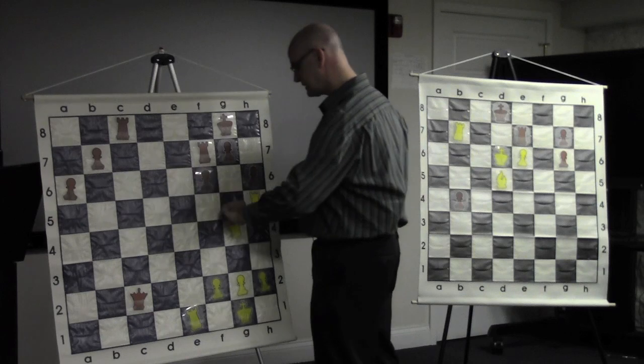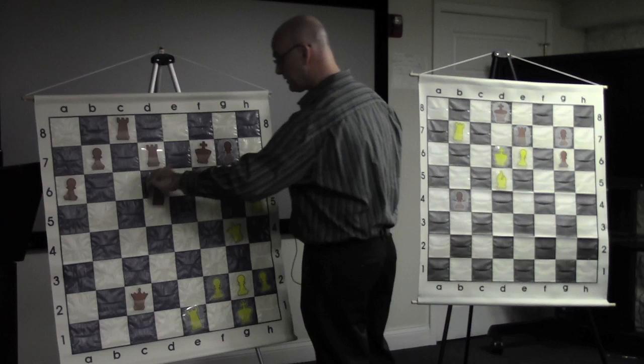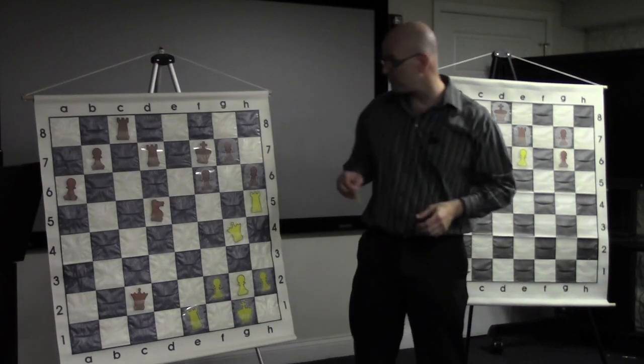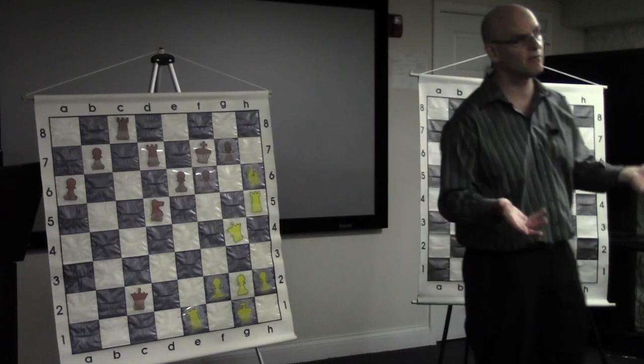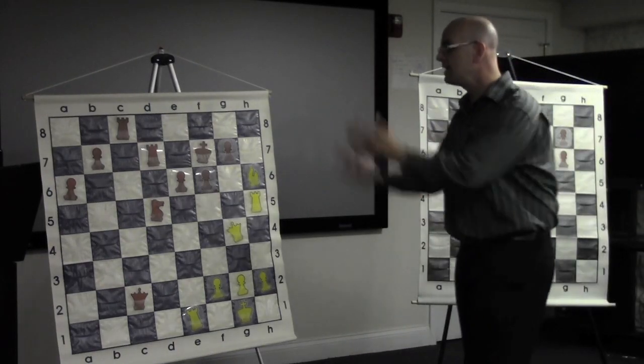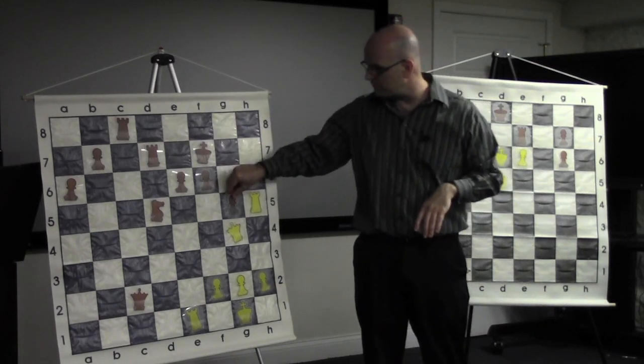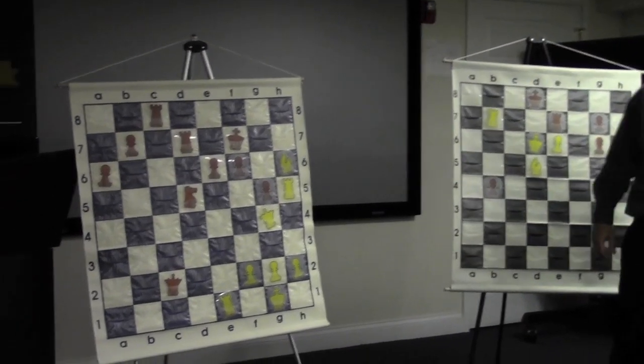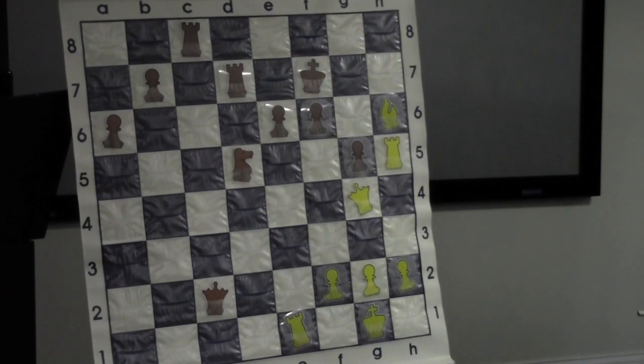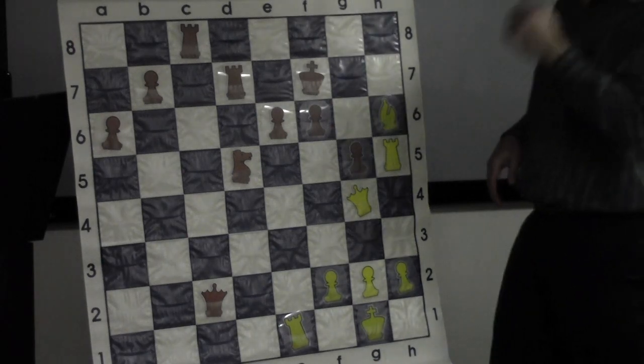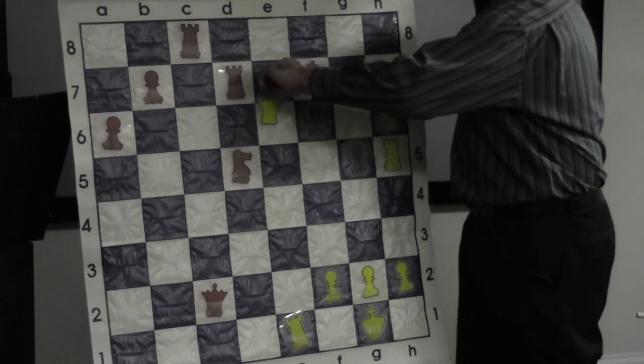Not only is this a difficult move to see, king g8, because it's a retreat, it's also difficult just because black is very likely to be sort of shell-shocked in this position. Things have been going very well, and suddenly I've got these aggressive moves flying at him. And so he tried to move g5. White has two forced wins here. Let me show you first the move I did not play. Win number one: Queen takes e6 check.